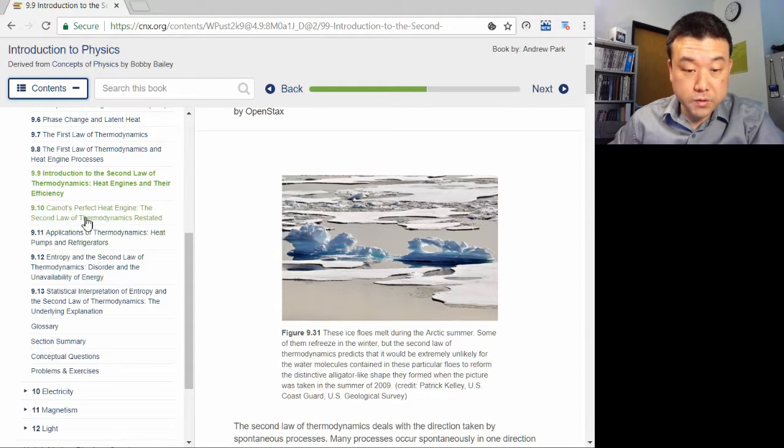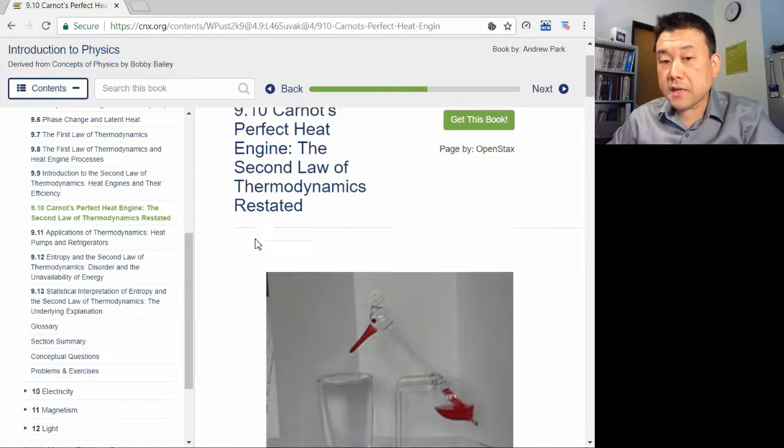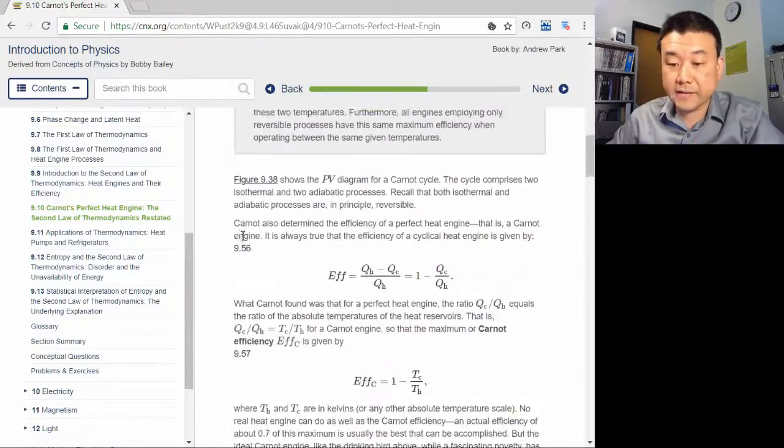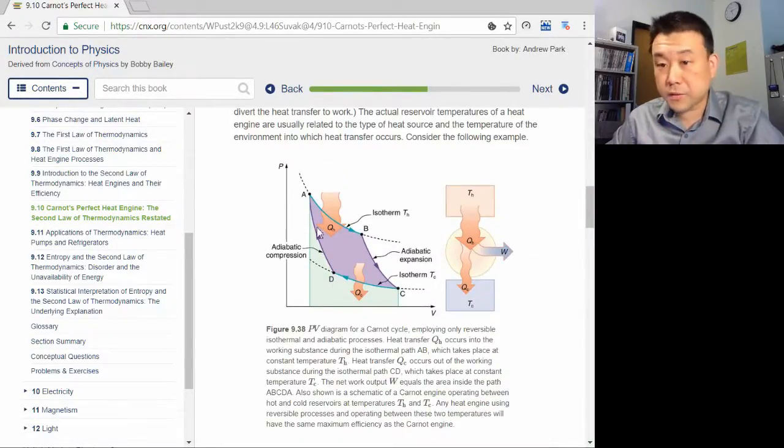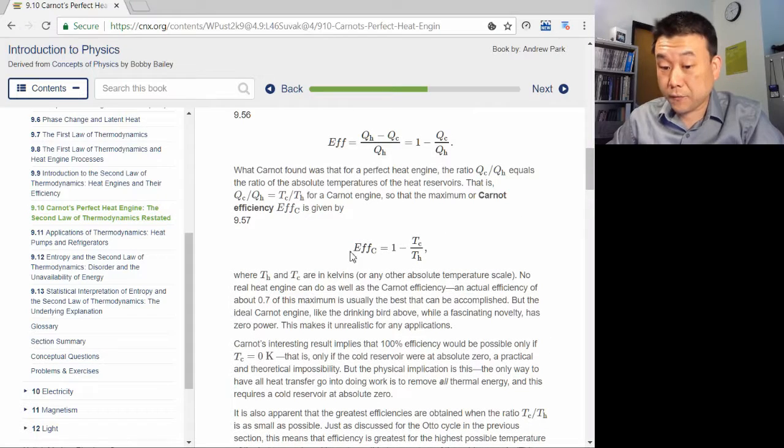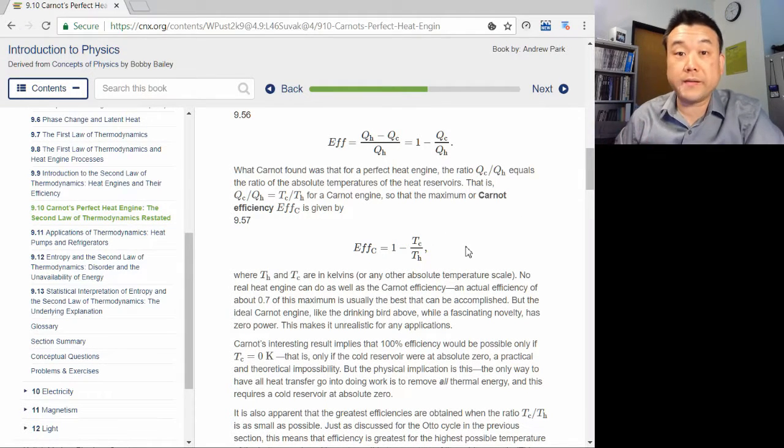I just want to encourage you to read through it and bring me any questions. Look at the Carnot efficiency and know that even the perfect ideal engine cannot be 100% efficient. This is the formula that gives the efficiency of an ideal perfect Carnot engine.